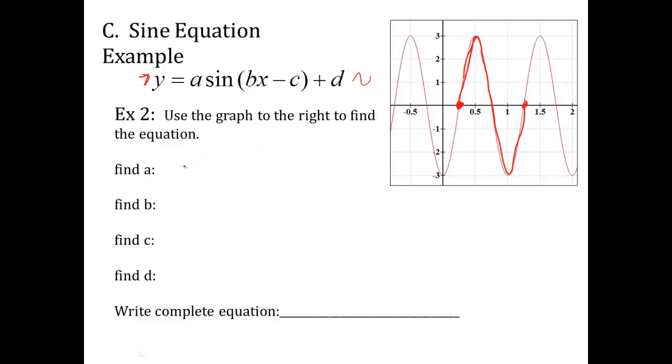And then we're just going to walk through the same exact steps. A is one half the maximum, which is three, minus the minimum, which is negative three. So one half of six. So it's still three. A is still three. B, remember B is two pi divided by B. And that's the length from peak to peak, trough to trough. Peak to peak here. What's the distance? From 0.5 to 1.5, that's the distance of one, just like we did before. So B is going to equal two pi.